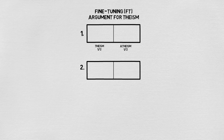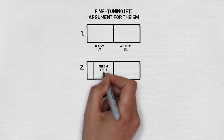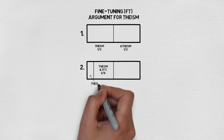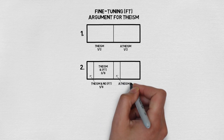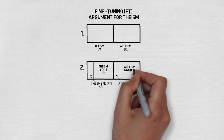Firstly, theism. We might think fine tuning is not that surprising on theism, since we think it's likely that God would want a world with living beings in it — perhaps so that he could have a relationship with them and the goods that come from that. As a result we give three eighths of the whole bar to theism and fine tuning, and one eighth to theism and no fine tuning. For the atheist portion, we think fine tuning is really unlikely on atheism as there's no being that wants life, and it seems extraordinarily unlikely that the universe happens to have the life-permitting finely tuned values by chance. So we give one eighth to atheism and fine tuning and three eighths to atheism and no fine tuning.